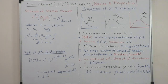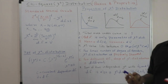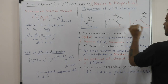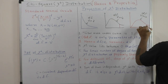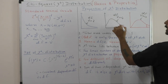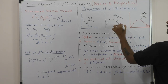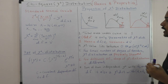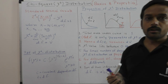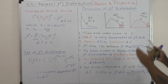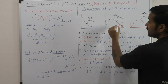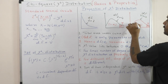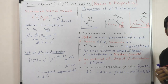Now, looking at the chi-square curve, the critical region lies on the right tail. The critical region — also called the rejection region — is denoted by alpha, and it lies on the right tail. The remaining region is called the acceptance region, denoted by 1 minus alpha.